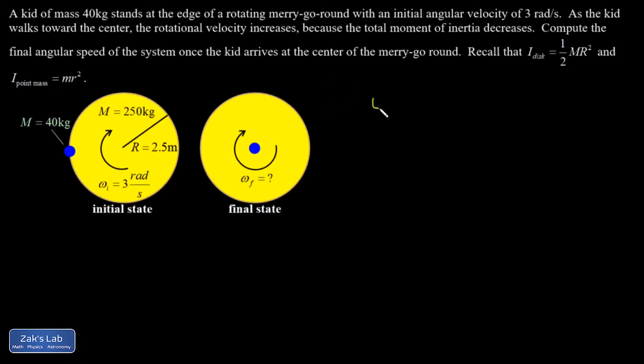So we start by saying L initial equals L final, assuming the bearings in this thing are good enough that we can ignore any external torque on the system. And my initial angular momentum is going to be I initial omega initial. My final is I final omega final.